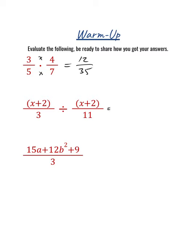When we're dividing, we're going to end up with our dividend here. Our first fraction stays as is, but our second fraction is going to flip and then multiply. That idea of flip and multiply — where the divisor is what gets flipped around — and we multiply.